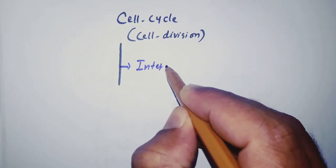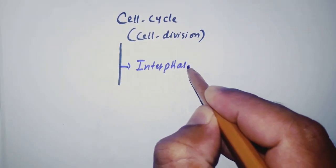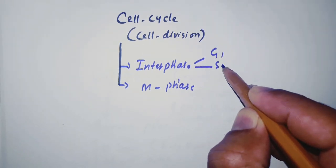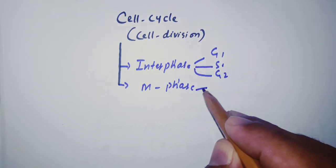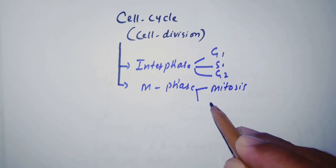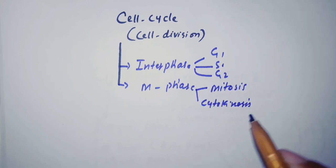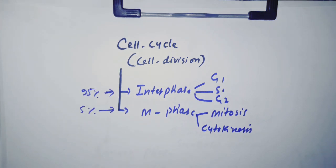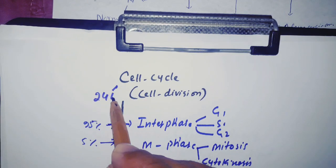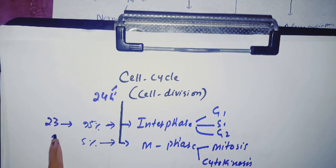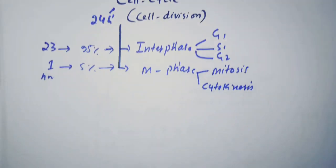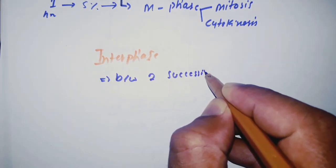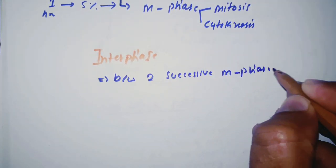The cell cycle consists of interphase and M phase. Interphase consists of G1, S, and G2. M phase consists of mitosis and cytokinesis. 95% of the cell's time is taken by interphase and 5% by M phase. The cell cycle in humans takes 24 hours, in which 23 hours is for interphase and one hour is for M phase. Interphase is present between two successive M phases, which can also be called mitosis.